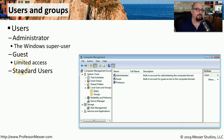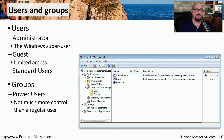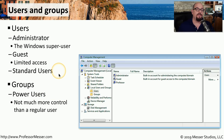The majority of people that log into Windows are standard users — people browsing the internet, working on spreadsheets, or word processing documents. A standard user does not have full access to the operating system but can perform day-to-day tasks. There are also groups built into Windows, some created to assign rights and permissions, such as the power users group, which provides additional rights to a standard user without full administrator permissions.